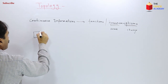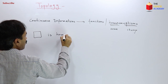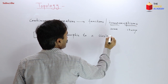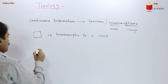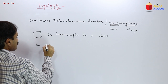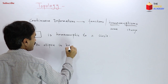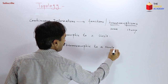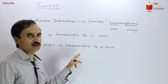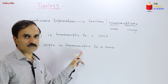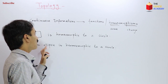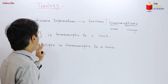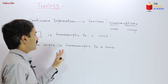A square is homeomorphic to a circle. Similarly, an ellipse is homeomorphic to a circle, because we can obtain an ellipse by just stretching a circle. They are topologically the same, or homeomorphic, because one can be obtained from another by a continuous deformation of stretching. That continuous deformation is what we call a homeomorphism in topology.